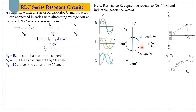The voltage leads the current in the case of the inductor by 90 degrees, so you can see there is a 90-degree angle between the reference current and the inductor voltage. The voltage lags the current in the case of the capacitor, so we have a minus 90 degrees between the capacitor voltage and the reference current.